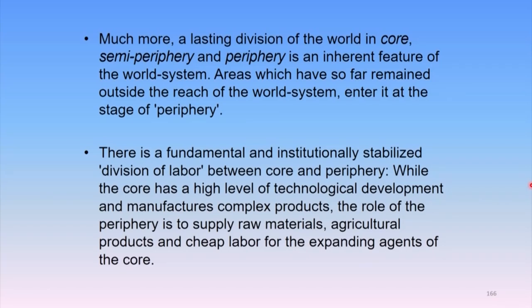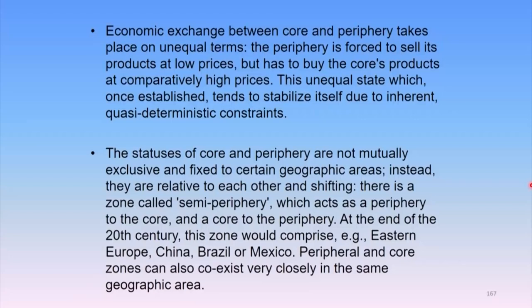It is based on international division of labor and improved modes of production. Such economic exchange between core and periphery takes place on unequal terms. The periphery is forced to sell its products at low prices but has to buy the core's products at comparatively high prices. This unequal state, once established, tends to stabilize itself due to inherent quasi-deterministic constraints. The statuses of core and periphery are not mutually exclusive or fixed — they are relative to each other and keep shifting. There is a zone called semi-periphery which acts as a periphery to the core and a core to the periphery.